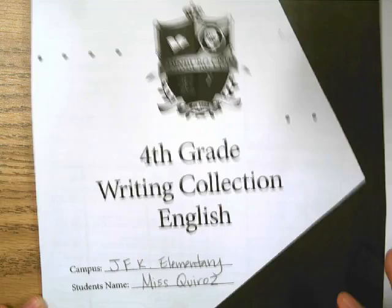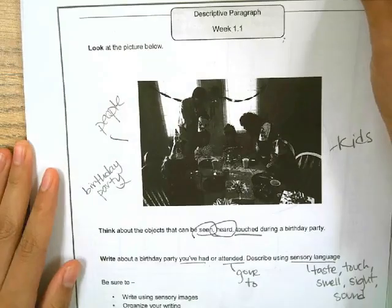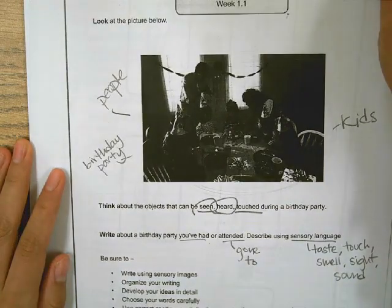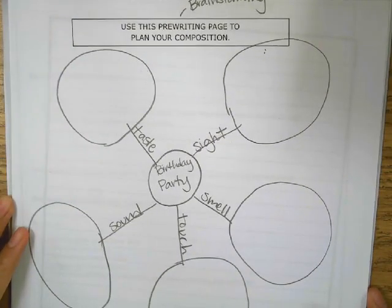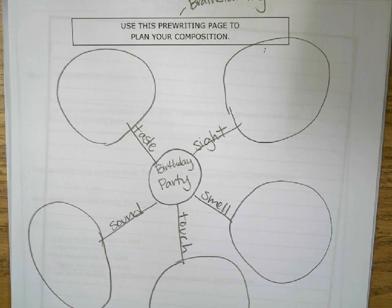Then we just got started on the writing collection — fourth grade writing collection. We have a descriptive paragraph. We were supposed to do this last week but didn't get to it. We have to write about a birthday party you had or attended and describe it using sensory language. We did some notes on sensory language, which is taste, touch, smell, sight, and sound. We just started off the web to brainstorm and we're going to continue tomorrow. This is what we did today, 9-11-2020. If you have any questions, go ahead and send me a message through Remind. Thank you, and I'll see you tomorrow.